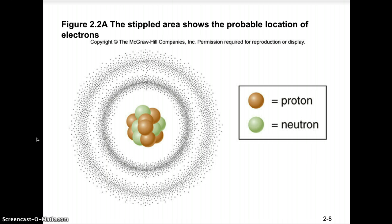In the electron cloud model, the nucleus is composed of protons (orange spheres) and neutrons (green spheres). Outside the nucleus you see a darker shaded region close to the nucleus and a more dispersed, lighter region farther away. This electron cloud model illustrates the probable locations of electrons as they move around the nucleus.